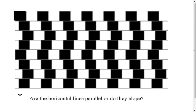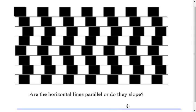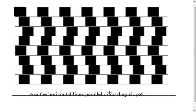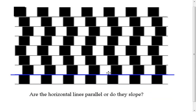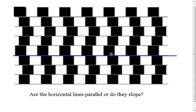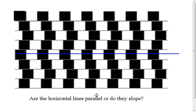On this one, it asks the question: are the horizontal lines parallel or do they slope? I'm guessing when you look at this, it looks like they're kind of curving. But if I take this blue segment here and just raise it up, you'll notice that the blue segment always touches every single one of those gray segments. Therefore, they're all actually parallel, even though it doesn't appear that they are.